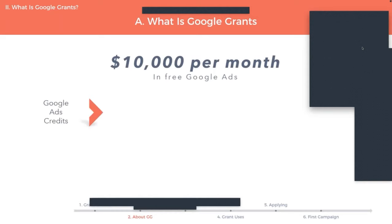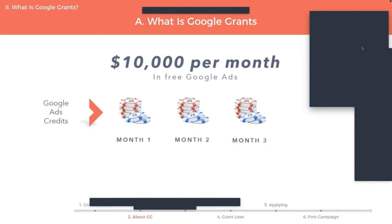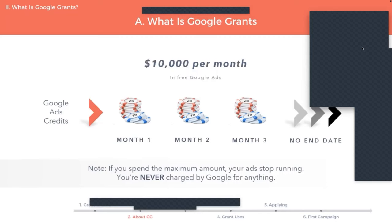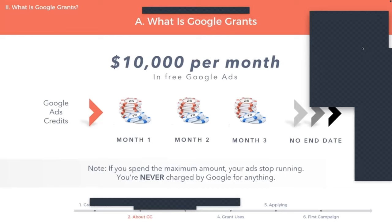That's not $10,000 per year or $10,000 one time — it's $10,000 per month in free Google advertising. Google Ads will give grantees credits every month worth $10,000. These credits renew every month and they have no end date. If you ever spend the maximum amount in one month — $10,000 — your ads will just stop running. You're never ever charged by Google for running any ads if you're part of the grant program. It's $10,000 per month or $120,000 per year in free Google advertising.